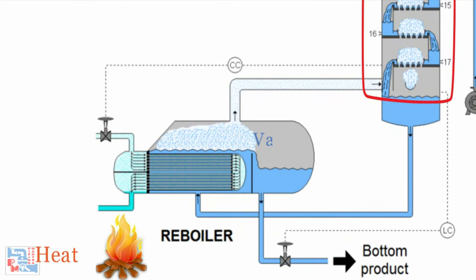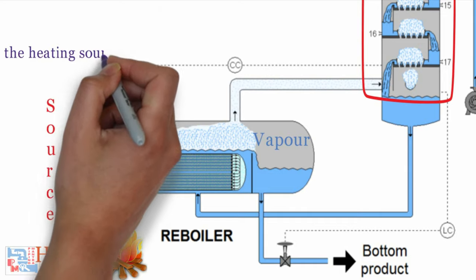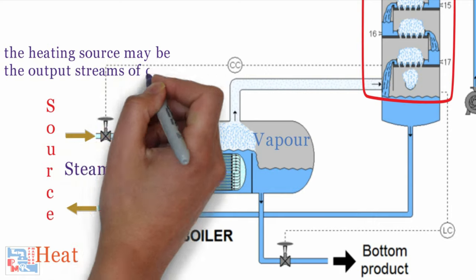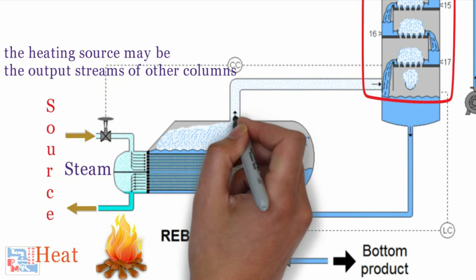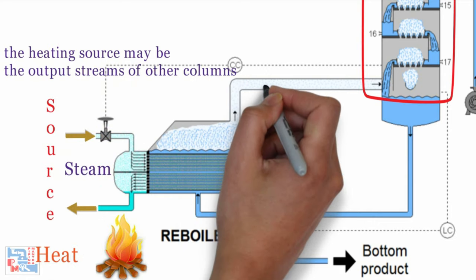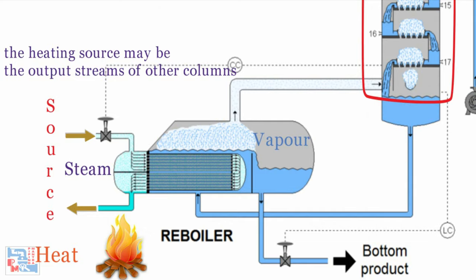Heat is supplied to the reboiler to generate vapor. The source of heat input can be any suitable fluid although in most chemical plants this is normally steam. In refineries the heating source may be the output stream of other columns. The vapor raised in the reboiler is reintroduced into the unit at the bottom of the column. The liquid removed from the reboiler is known as the bottoms product or simply bottoms.